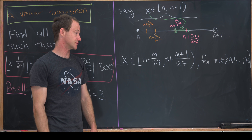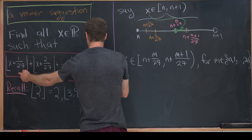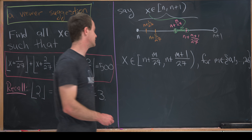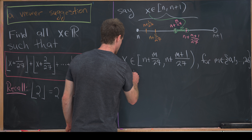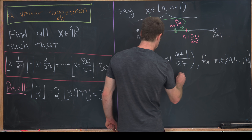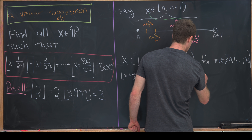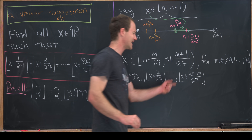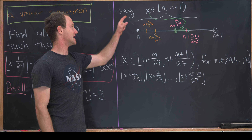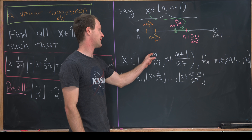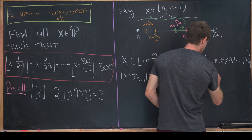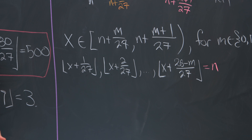Now we want to split the terms forming our sum into a few categories. The first category starts with x plus 1 over 27, x plus 2 over 27, all the way up to x plus 26 minus m over 27. Each of these numbers lies strictly between n and n plus 1 by the structure of our subintervals, so all of these floor values are equal to n.